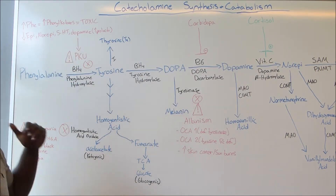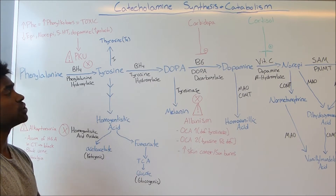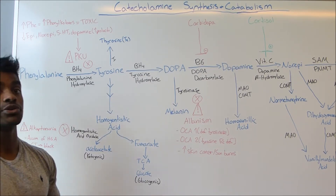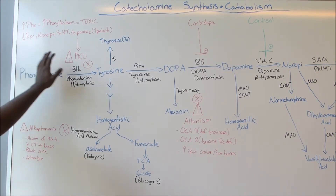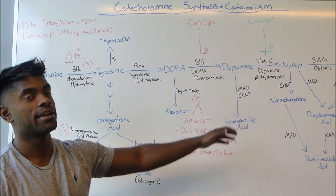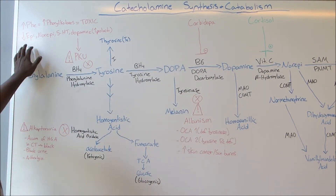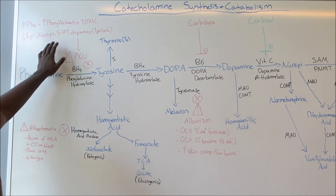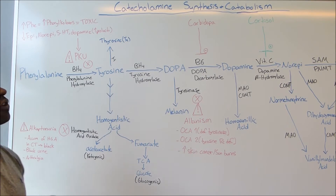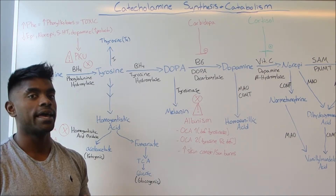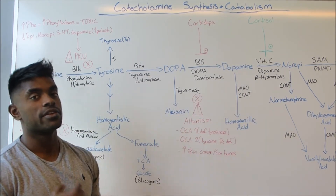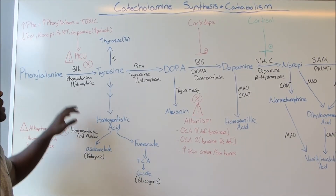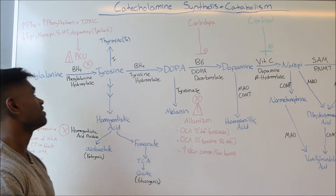Some of the problems from PKU include growth issues and decreased IQ. Also, if we think about blocking the pathway at phenylalanine hydroxylase, it makes sense that we'll see decreased end products such as epinephrine, norepinephrine, serotonin, and dopamine. Thinking back to endocrinology, a decrease in dopamine means an increase in prolactin, since dopamine is what normally inhibits prolactin levels.